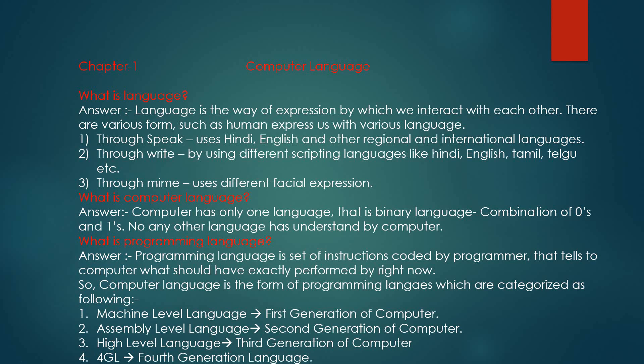The third form of our language is through mind, which is mime — that is, the facial expressions of our language. Through facial expressions we can convey a message and the other person understands those expressions. This is also a form of interaction between each other and a form of language. Now we come to the next topic: what is computer language?